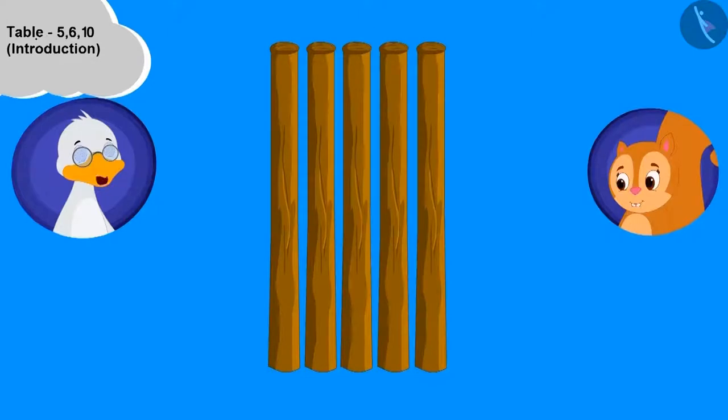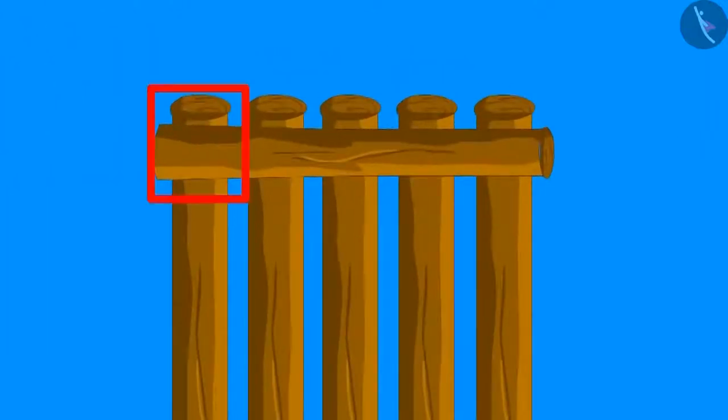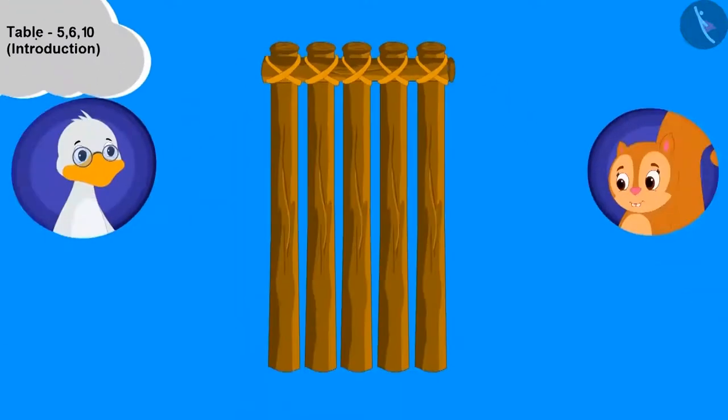Now we will place one wood horizontally like this and we will tie a rope at the joints where the horizontal piece cuts the vertical pieces. This is 1 multiplied with 5.